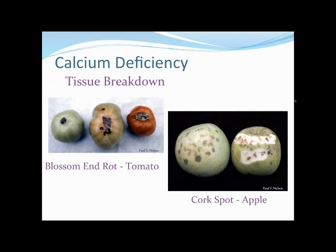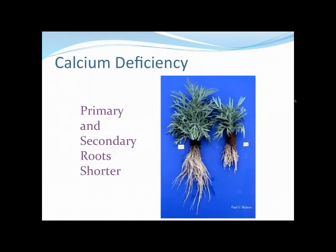Roots with calcium deficiency will have shorter primary and secondary roots with quite a few more branches on them, as you can see with the plants on the right that have calcium deficiency associated with them.